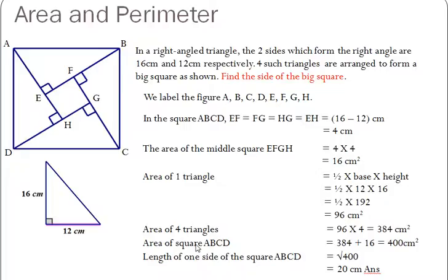So, the area of the square is equal to 384 plus 16, which is equal to 400 cm².